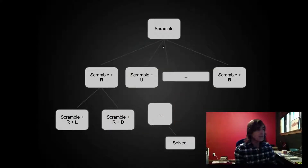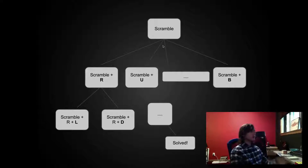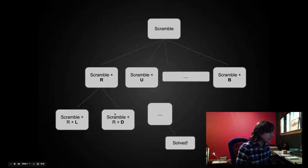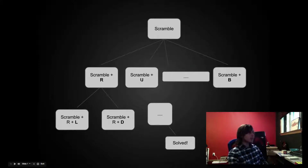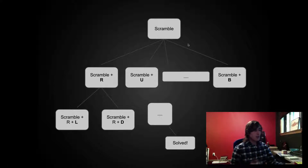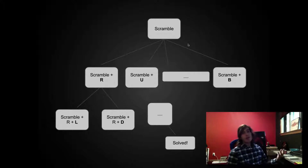A slight modification to this would be to use something called a search tree. Just using a search by itself is still kind of brute forcing, but the general picture is that you start out with your scrambled state at the top and then you try making an R, you try making a U, and you get all these different configurations. From each of those configurations you expand one to then make an R and a D. You keep on expanding and trying more and more nodes down until you finally get to a solved cube, then you just trace your way back, see what you did to get there, and print out the solution.